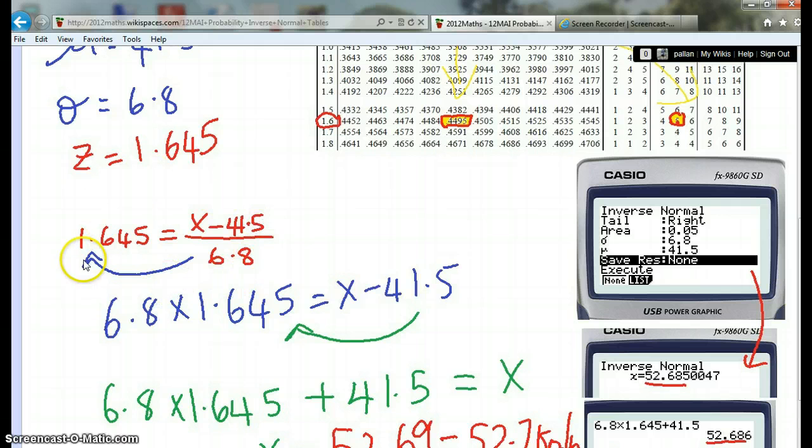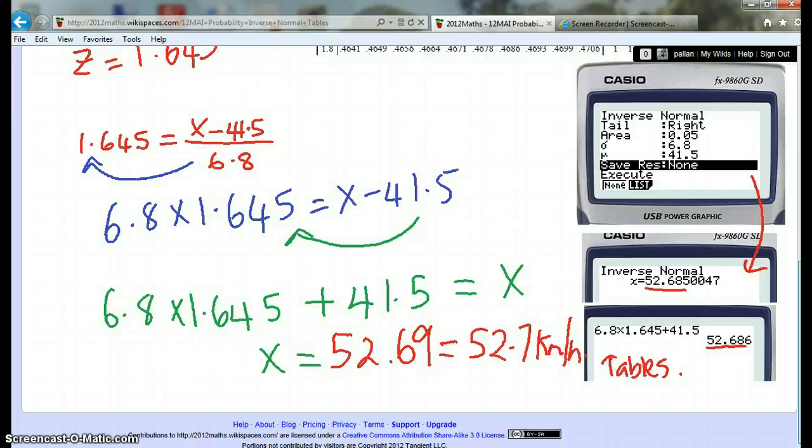Alternatively, if you've got a fancy calculator, this is a lot easier. So then we've got X, and we put it into context. In this particular case, it was 52.7 kilometers per hour. That's the X value.